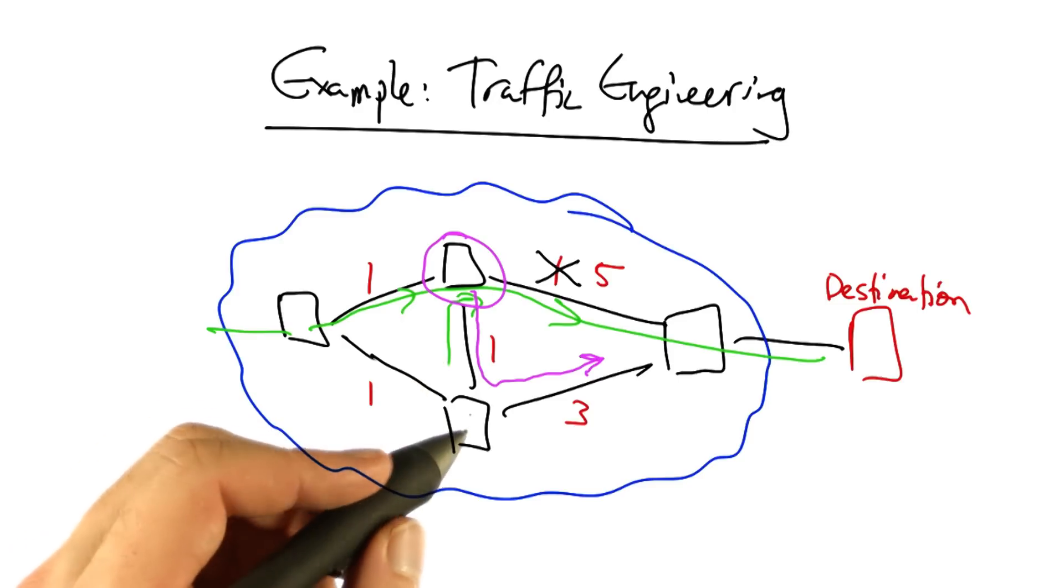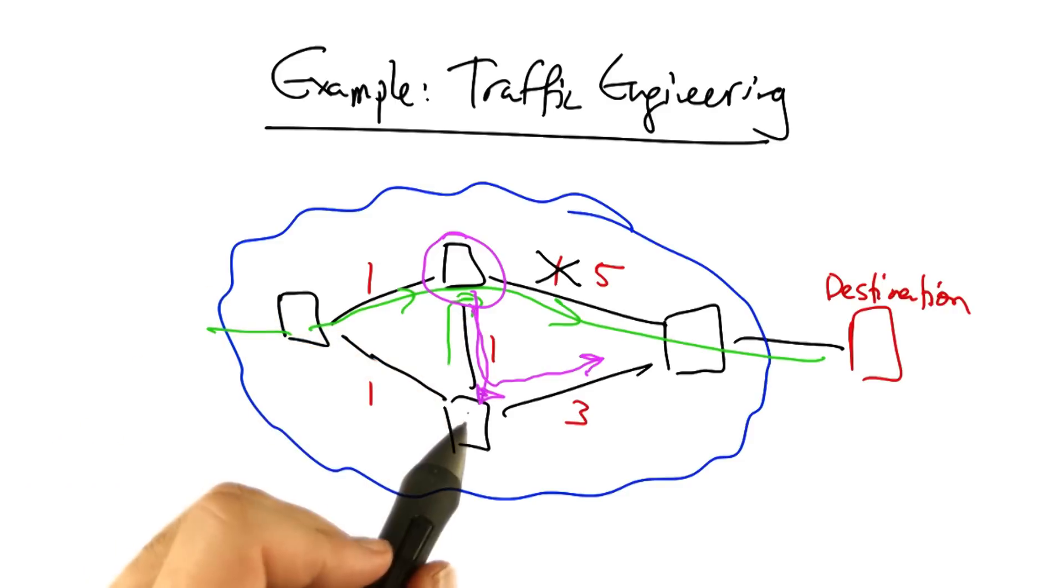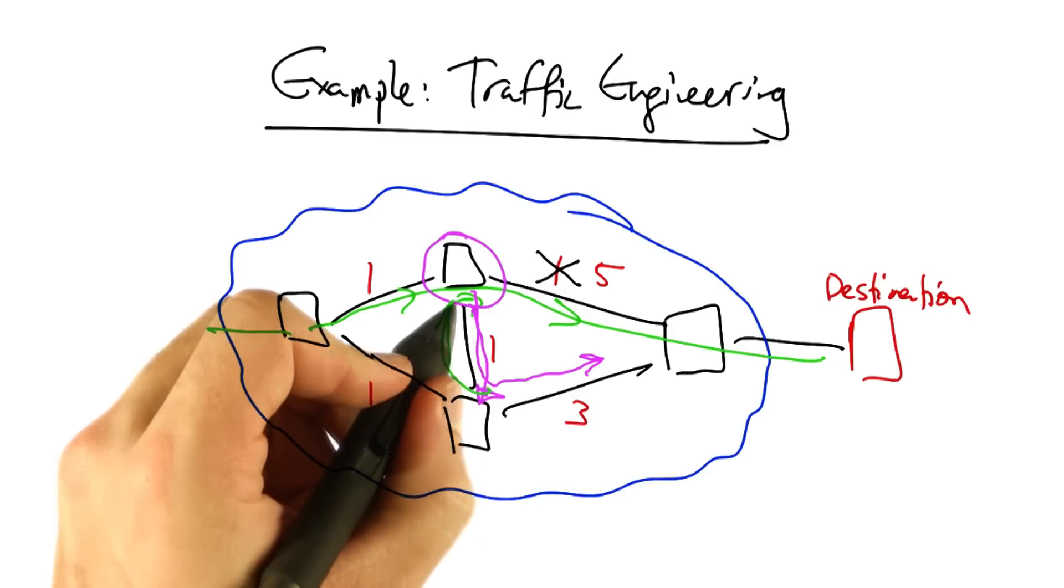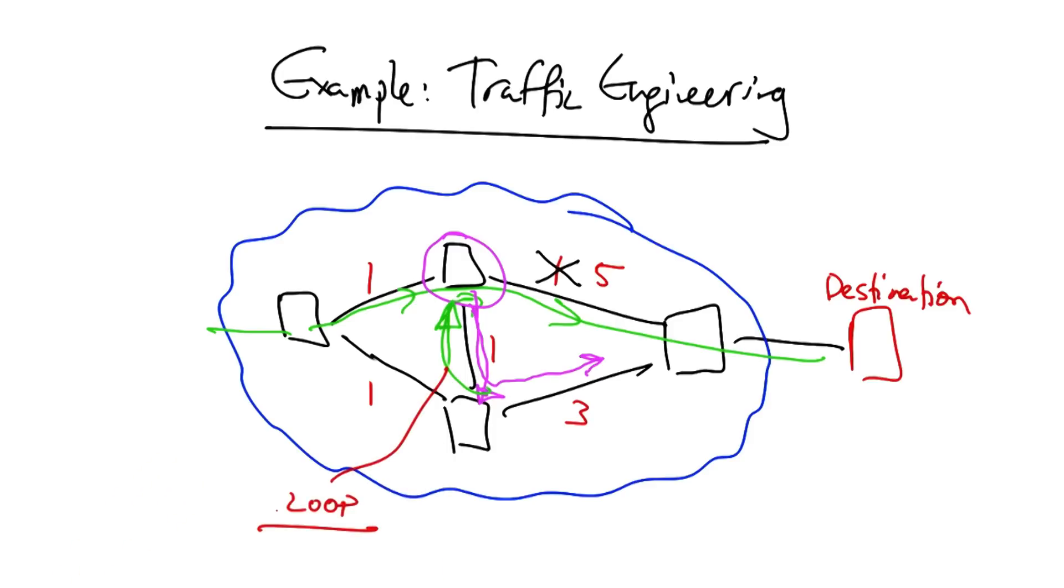In this case, we would have a potential forwarding loop. Traffic would proceed to the bottom switch, but the bottom switch would still have the old network state and would continue to forward traffic to the top switch, resulting in a forwarding loop.